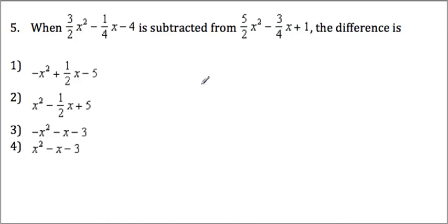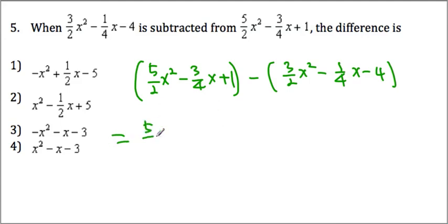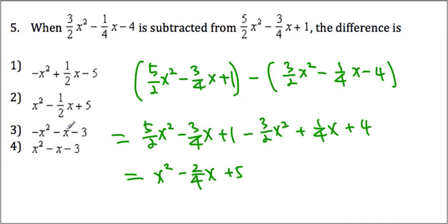When this one is subtracted, we're looking at 5 over 2 x squared minus 3 over 4 x plus 1, minus 3 over 2 x squared minus 1 fourth x minus 4. So we get 5 over 2 x squared minus 3 over 4 x plus 1, then subtracting gives positive 1 fourth x and positive 4. Then 5 over 2 minus 3 over 2 becomes 2 over 2, which is x squared. Negative 3 over 4 plus 1 fourth becomes negative 2 fourths x, then plus 5. That's equal to choice 2.